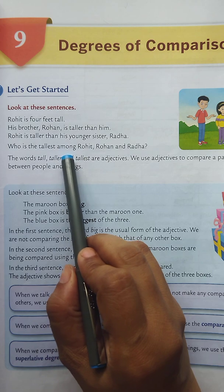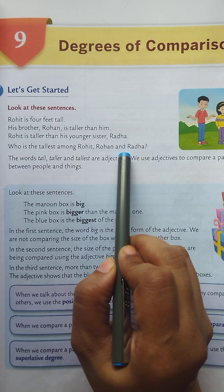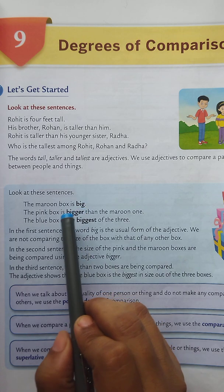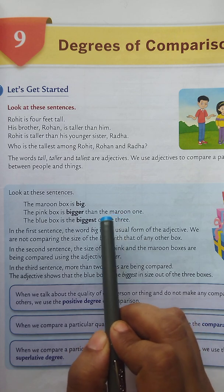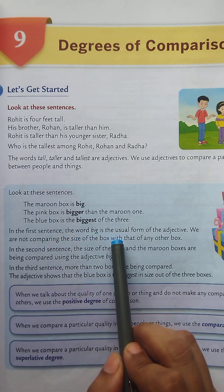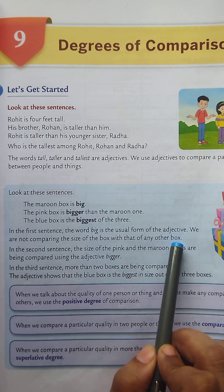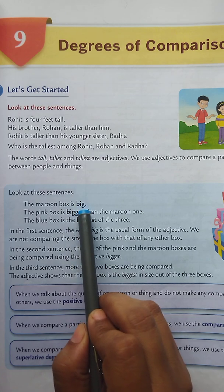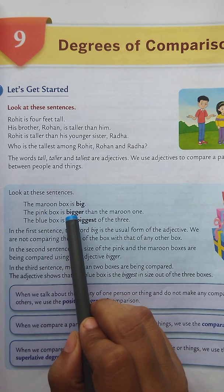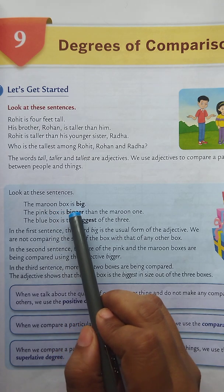In the fourth sentence, who is the tallest among Rohit, Rohan and Radha? Here I am comparing more than two persons. Now look at these sentences: the maroon box is big; the pink box is bigger than the maroon one; the blue box is the biggest of the three. In the first sentence, the word big is the usual form of the adjective — we are not comparing the size of the maroon box with that of any other box. This is called positive degree.